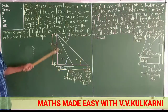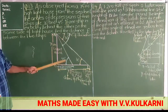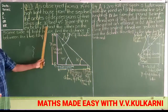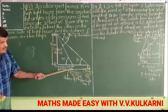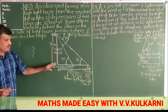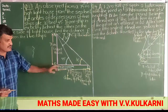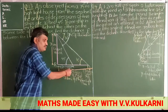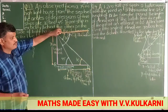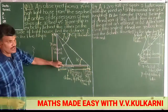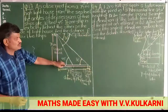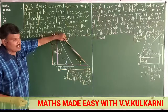Aapko batana hai ki what is the distance between the two ships. A, B is the lighthouse, yeh point C hai. Distance of the first ship from the lighthouse is x, distance of the second ship from the lighthouse is y. This is the line of observation, this is water, and this line of observation is parallel to this water, and this is the transversal.